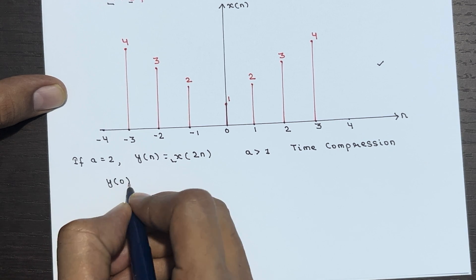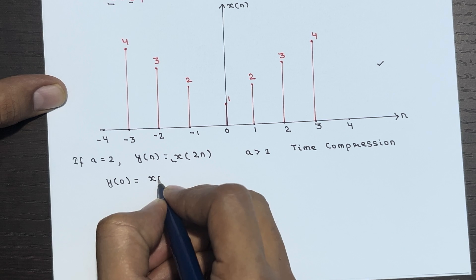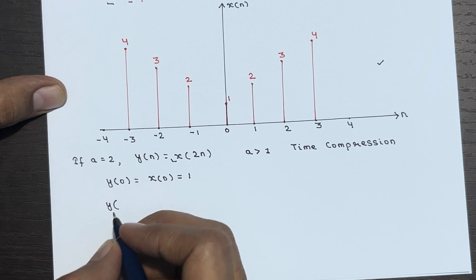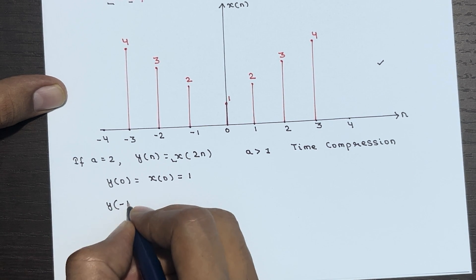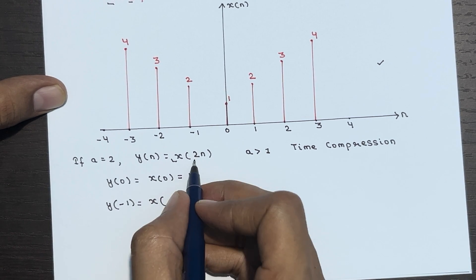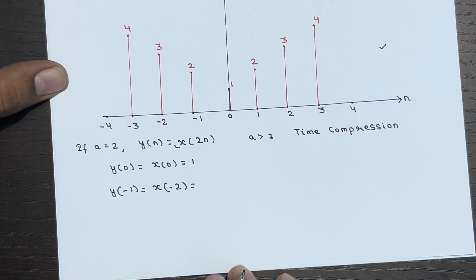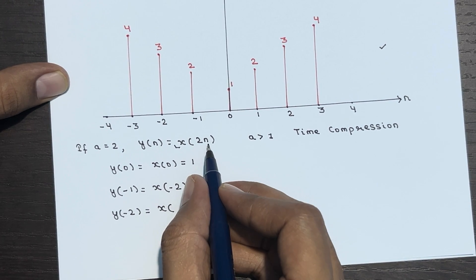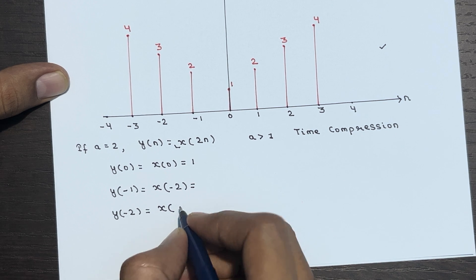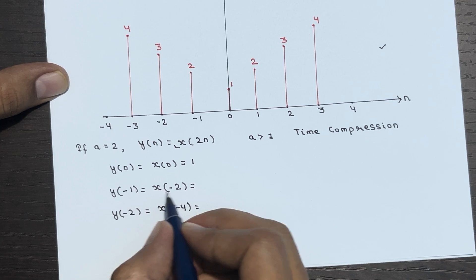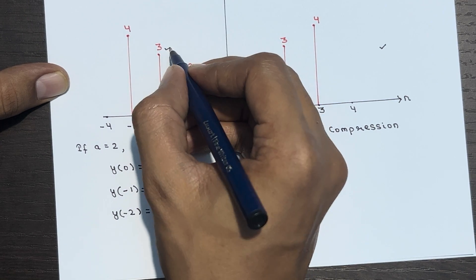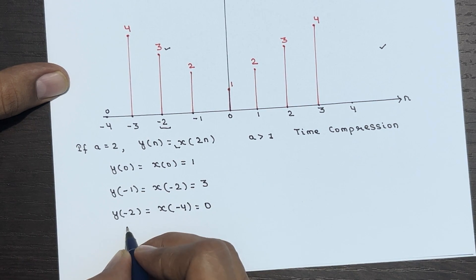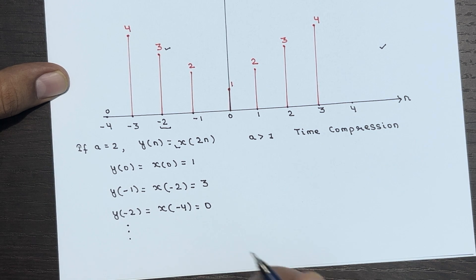At y(0) = X(0) = 1. At n = -1, Y(-1) = X(2×(-1)) = X(-2). Checking Y(-2) = X(2×(-2)) = X(-4). The value of X(-2) is 3, but X(-4) is 0. If you go further to Y(-3) and Y(-4), you will get 0 only.